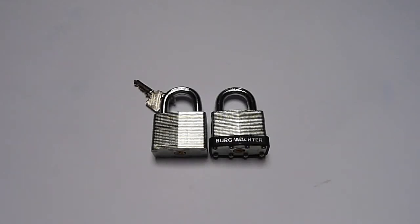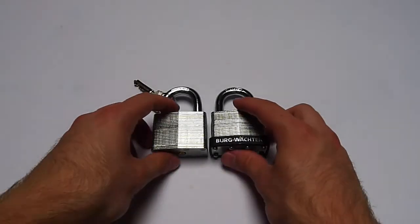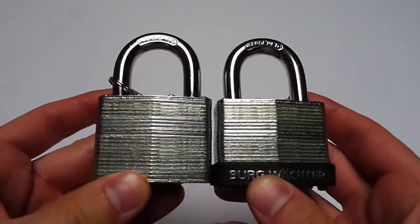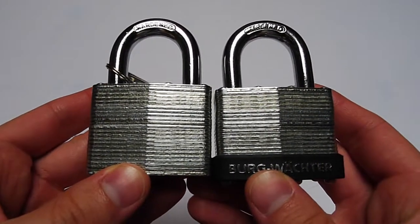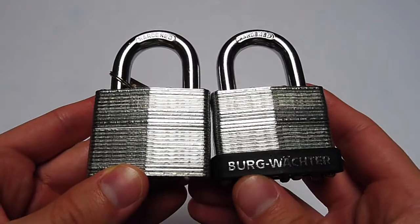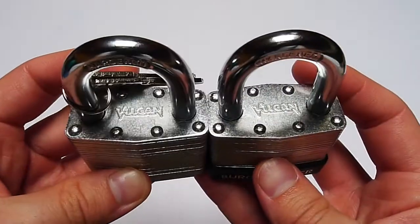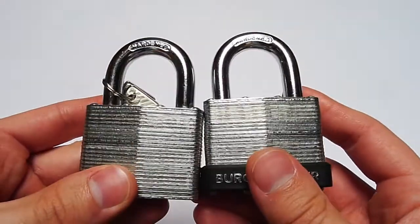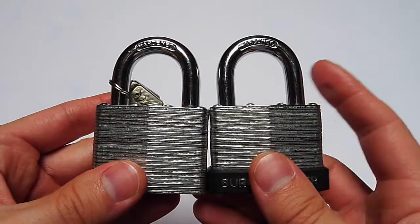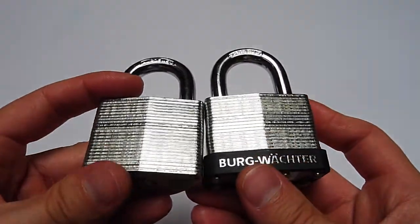Hello everyone and welcome. Let's take a look at the Burgwächter Vulcan laminated padlock. This is a laminated padlock produced by the German company Burgwächter, the Vulcan featuring a hardened shackle, should be 10 millimeters in diameter.